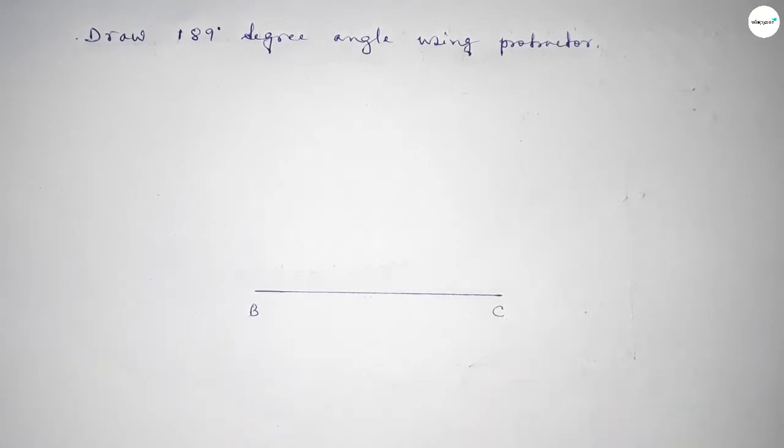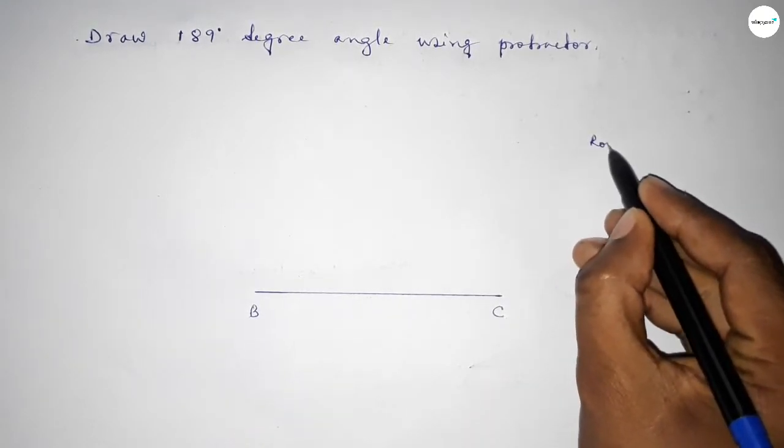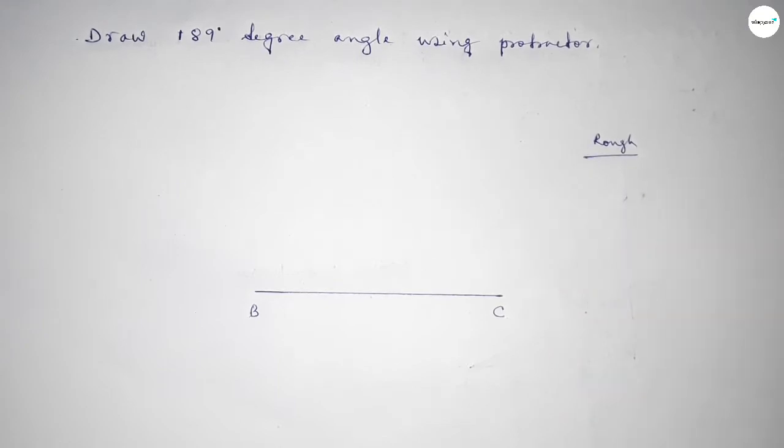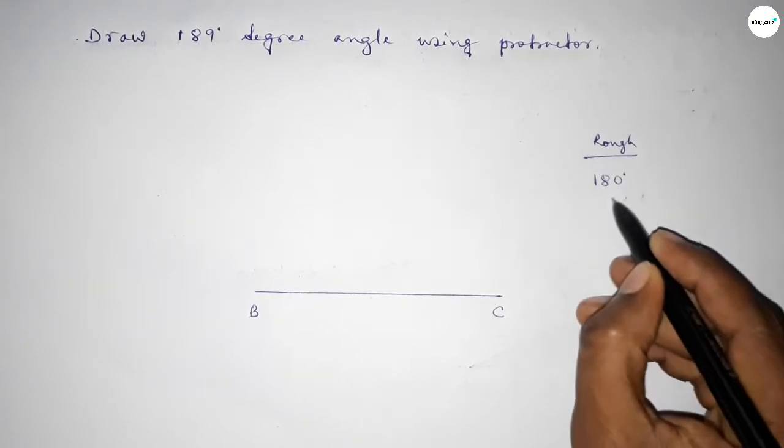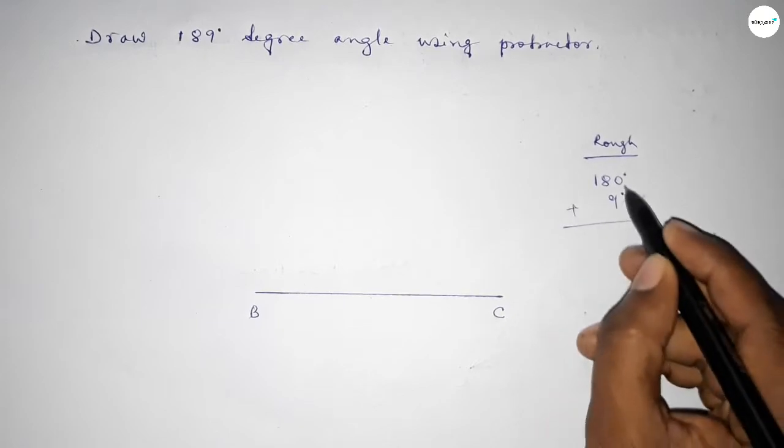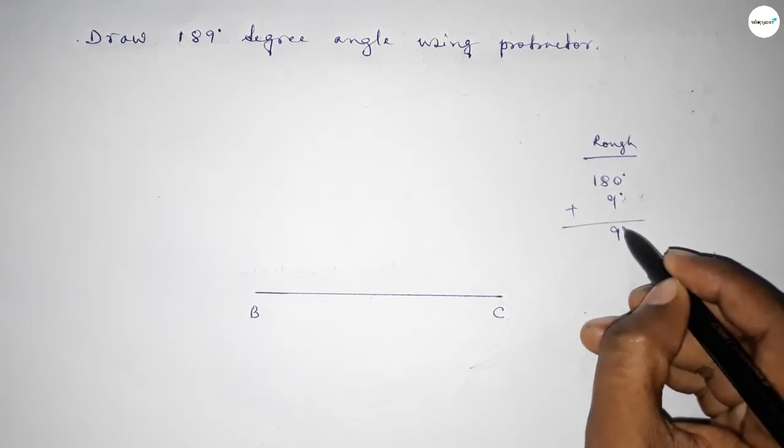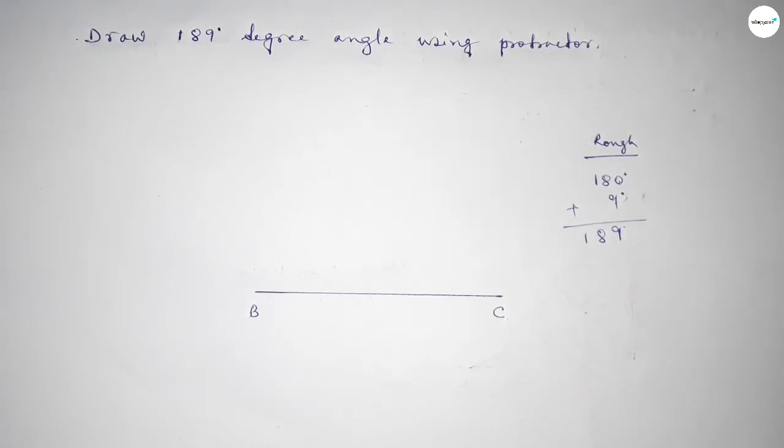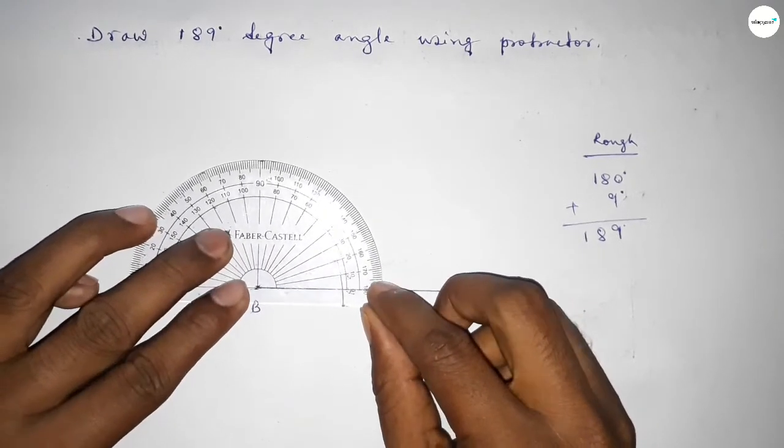Taking here point B and here point C. Now roughly discussing some calculation here. So if we add 9 degree angle with 180 degree, then we can get 189 degree angle. So first we have to count 180 degree angle on the point B.